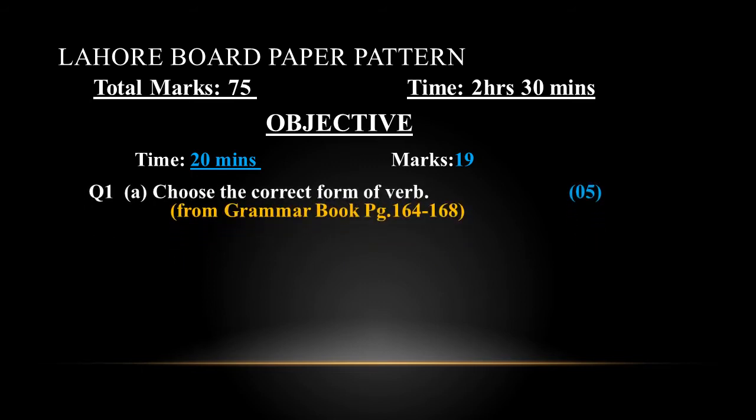There is one question in objective with 4 parts. Part A is 'choose the correct form of verb.' The items in this part are mostly selected from your grammar book exercises on pages 164 to 168. This part is of 5 marks.